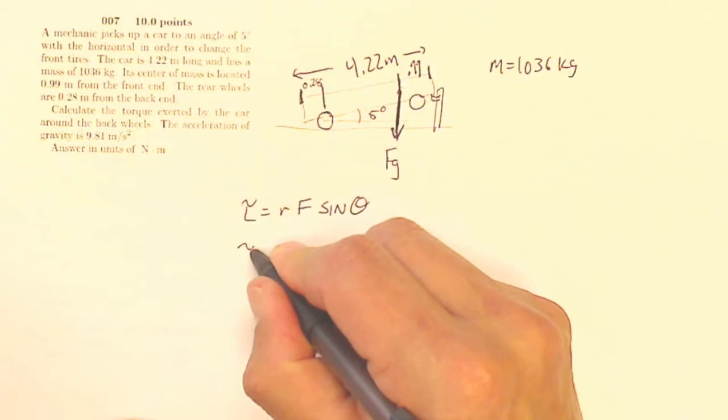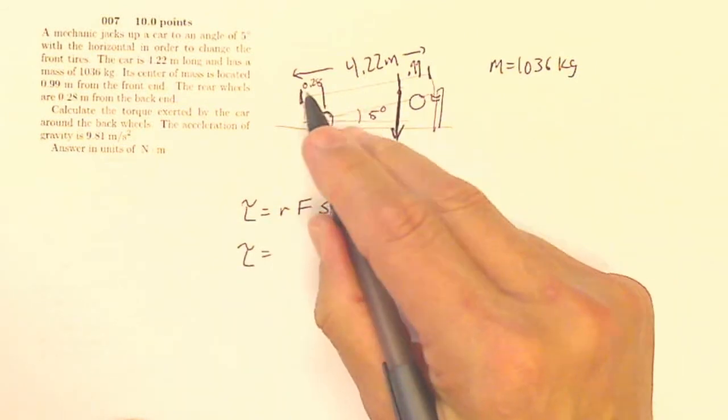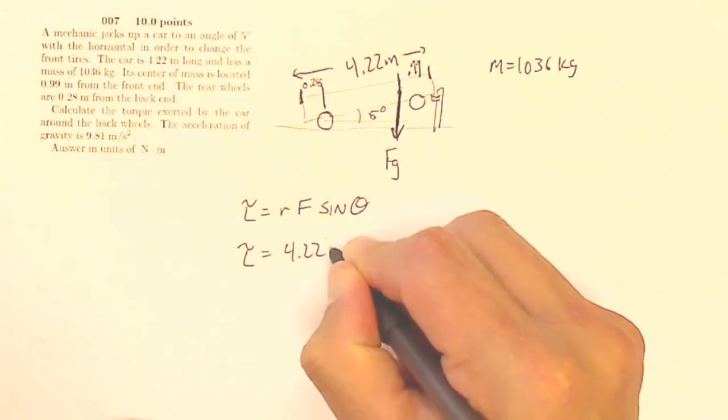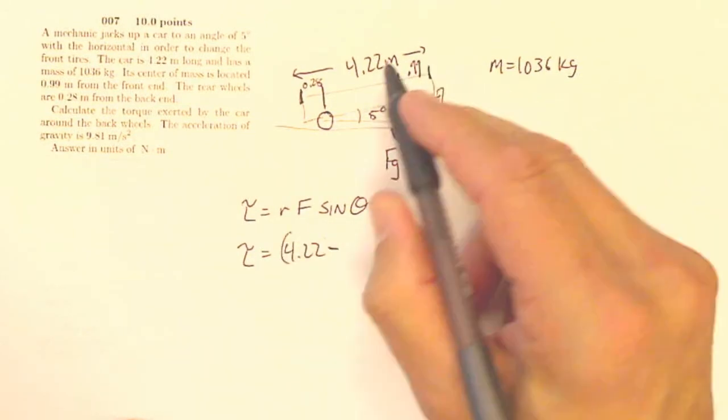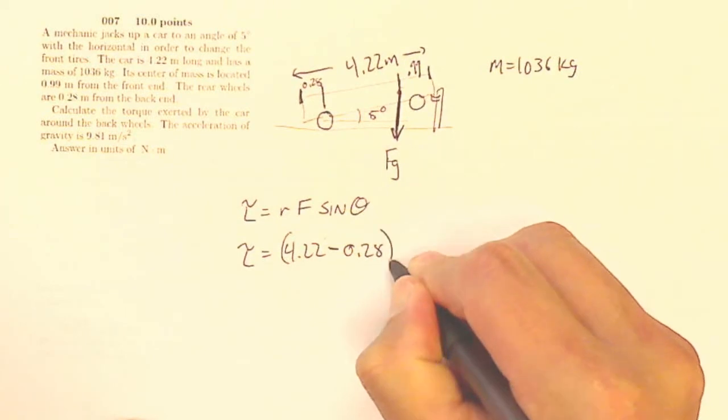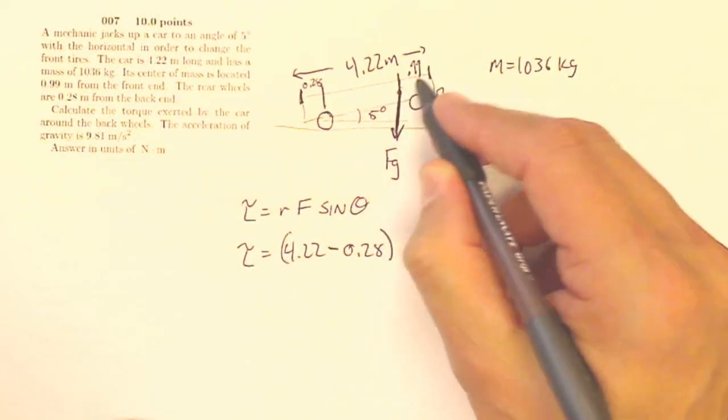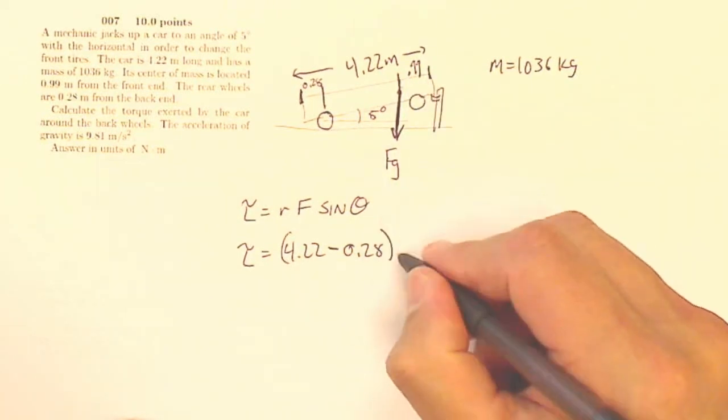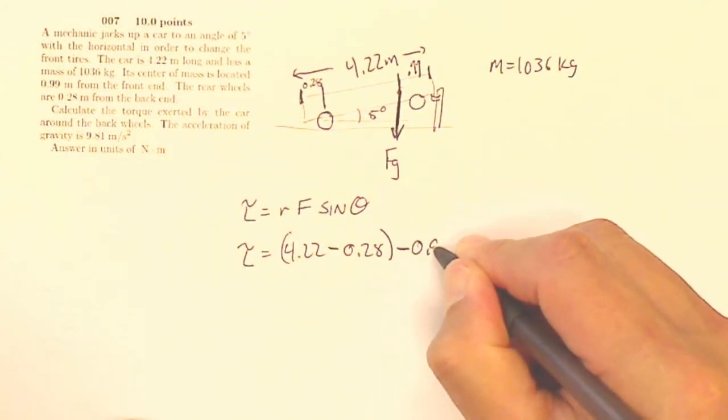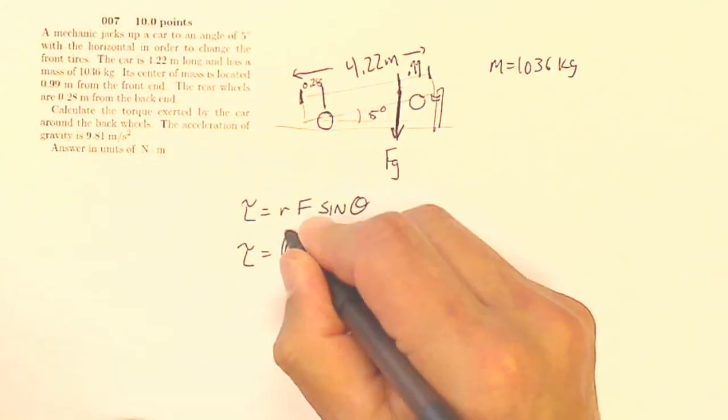then I know that my R is going to be the length of the car minus the distance to the back wheels, also minus the distance to the front wheels. I'll also say minus 0.99.